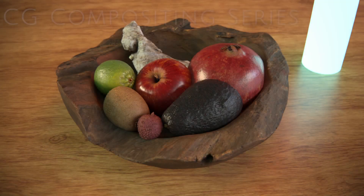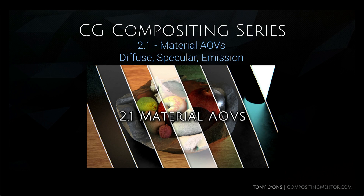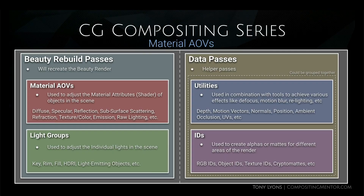Hello everyone and welcome back to the CG compositing series. I'm Tony Lyons and today we're going to be talking about material AOVs, taking a close look at the differences between diffuse, specular, and emission. We talked in the last video about the different categories of render passes: beauty rebuild passes, material AOVs, light groups, data passes, utilities, and IDs, which help you with masks, motion vectors, and so on. We're going to be focusing on the first category, which is material AOVs.